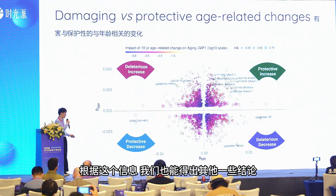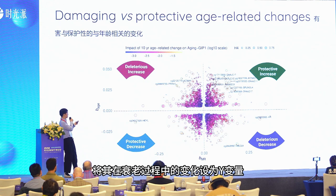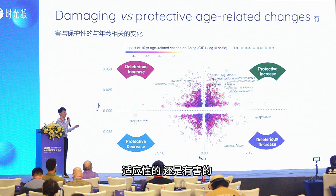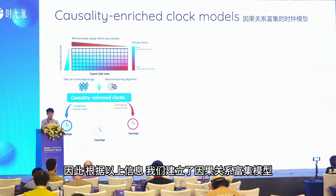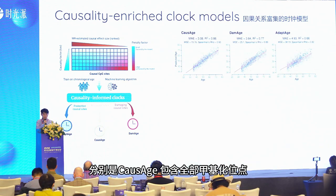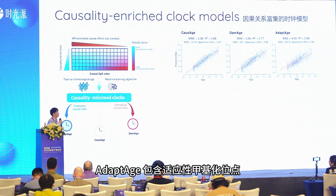From this information we can also derive something else. By putting the causal effect on the x-axis and their change during aging on the y-axis, we can separate whether methylation sites are protective or adaptive, or whether they are damaging. We built the first causal-enriched model, feeding this causal information into three different products: CausAge, which uses all causal-damage sites; DamAge, using only damaging methylation sites; and AdaptAge, using only adaptive methylation sites.